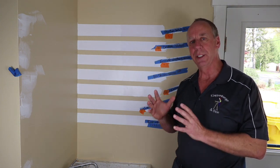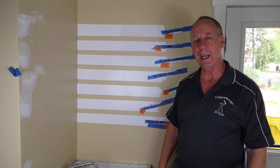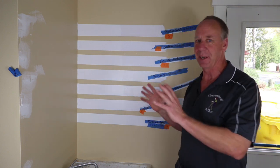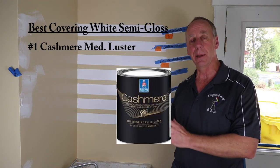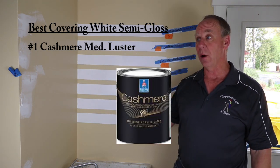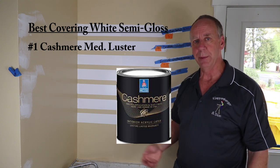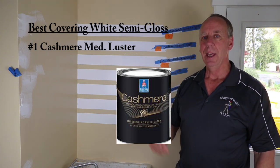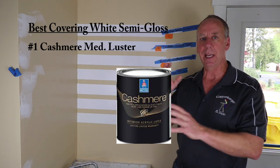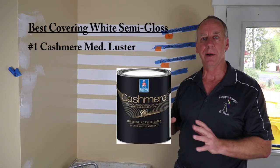Let's see if we can make some summations of what Sherwin-Williams semi-gloss white paint covers the best over these different backgrounds. I think it's fair to say that the Cashmere medium luster, which is a little bit shinier than most semi-glosses, more shinier than all Sherwin-Williams semi-glosses, had the best coverage. It came in first place and a couple second places. Very good job.